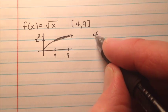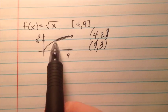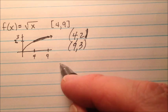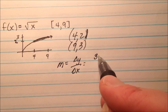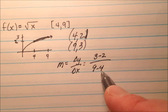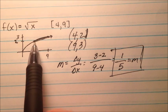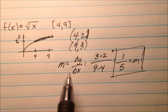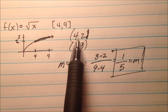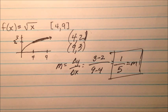Let's find ordered pairs. At x equals 4, y is 2, because the square root of 4 is 2. At x equals 9, y is 3. So we have (4, 2) and (9, 3). To find the average rate of change, we find the slope: change in y over change in x. So 3 minus 2 over 9 minus 4 is 1 fifth. That's the slope of the secant line and our average rate of change for the square root function between 4 and 9.